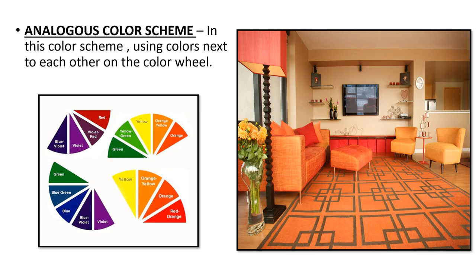The second color scheme is analogous color scheme. In this scheme, colors that are next to each other on the color wheel are used — typically three to five neighboring colors. For example, yellow, yellow-orange, orange, red-orange, and red can be used together. This is also called a neighboring color scheme. As seen in the photo, yellow, yellow-orange, orange, red-orange, and red are used together to create an analogous color scheme.